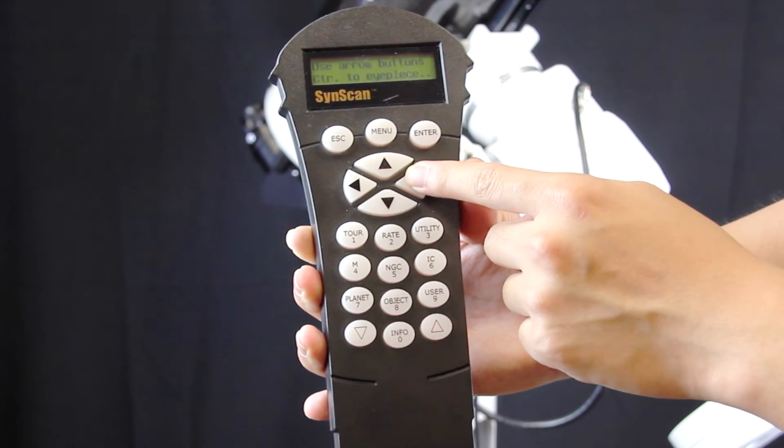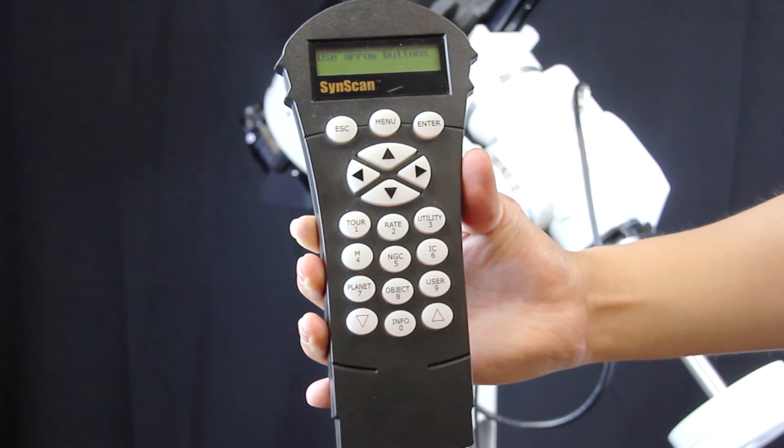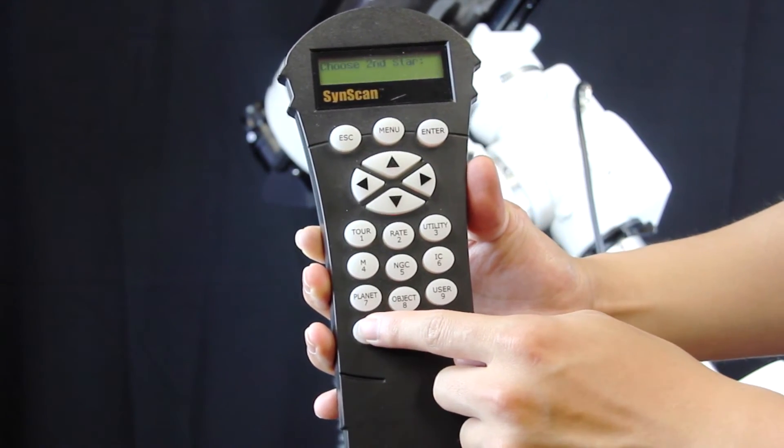After that, we want to center the star in the field of view of the eyepiece using the arrow buttons. Repeat the procedure for the next star until the telescope is aligned properly.